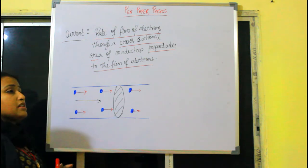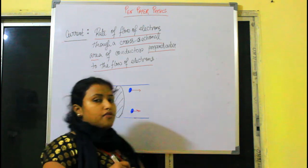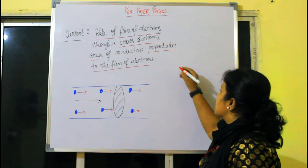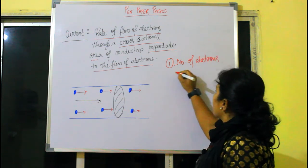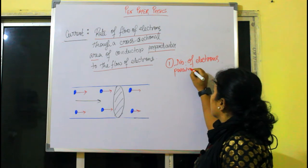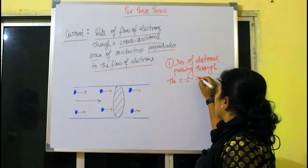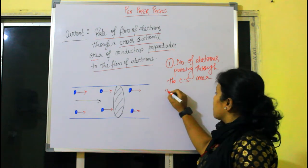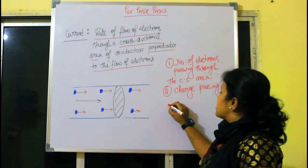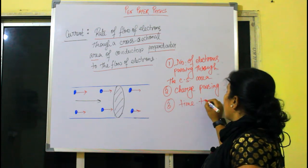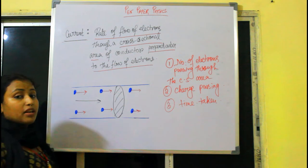First, we find the number of electrons passing through the cross-sectional area. Second, we find the charge passing through that area. Third, we find the time taken for that charge to pass through the cross-sectional area. After that, we can calculate current.